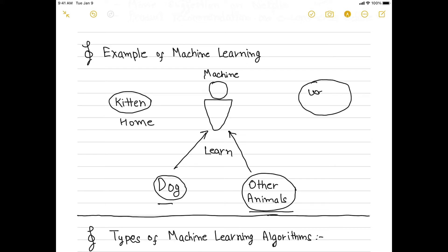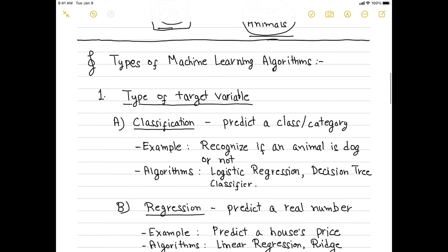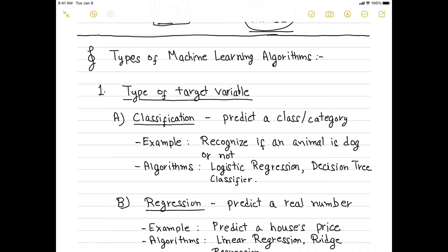The machine will learn by itself what a dog is and what is not. So tomorrow, if some unknown dog comes to the entrance of the house where you have installed this machine, it will recognize the dog because it has already learned what a dog looks like. When it sees something similar, it will recognize it and start making scary noises to scare it away. That is the basic concept of machine learning — give it data to learn, and next time it will recognize or predict on data it has not seen before.